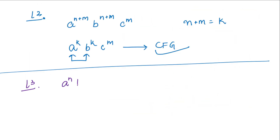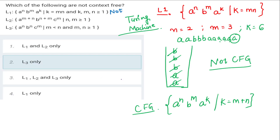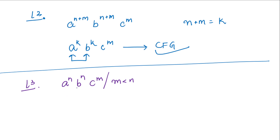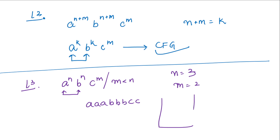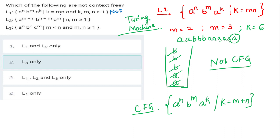For L3: a^n b^n c^m where m < n. There are two things to handle: first, compare a and b (they must be equal), and second, verify that c count is less than b count. Taking n=3, m=2 gives string: aaa bbb cc. With a stack, push the a's then pop for each b — pop, pop, pop. Now for the two c's there is nothing left to compare with, so this is not a CFG. So the answer is that L1 and L3 are both not context-free grammars.